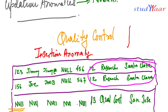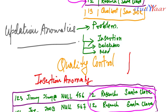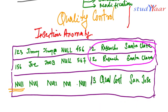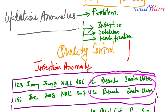So this was insertion anomaly. I have three anomalies here: insertion anomaly, deletion anomaly, and modification anomaly. Right now I just covered insertion anomaly, and now I am going to explain deletion anomaly.